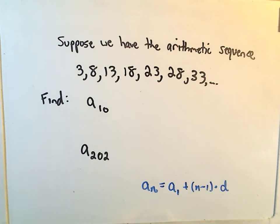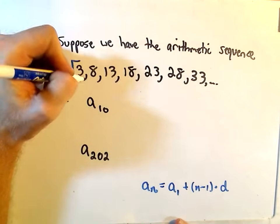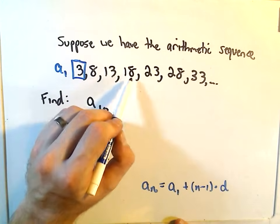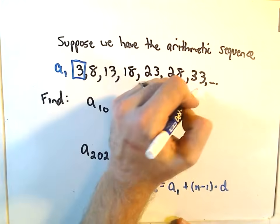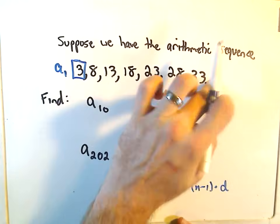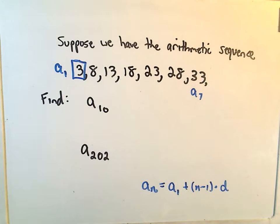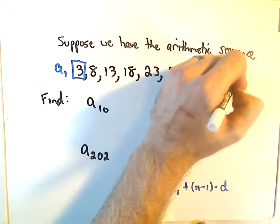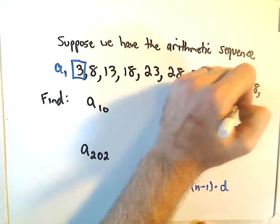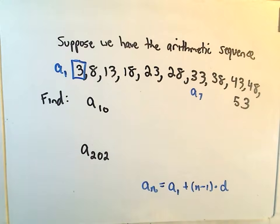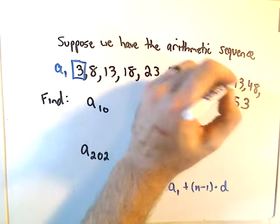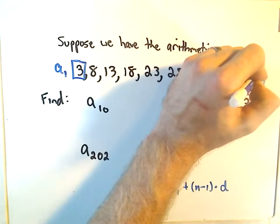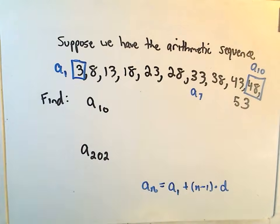Okay, to find the tenth term, we could almost write it out. So again, this first number, that's our a_1, a_2, a_3, a_4, a_5, a_6. This would be a_7. So we could write out a couple more. Okay, our d value's 5. So we would get 38, 43, 48, and then 53. I think that's how many I need. a_8, a_9. Whoops, I did one too many. So there's our a_10. It should be the value 48.